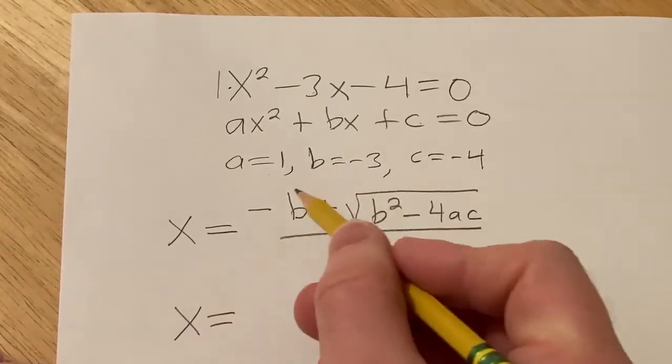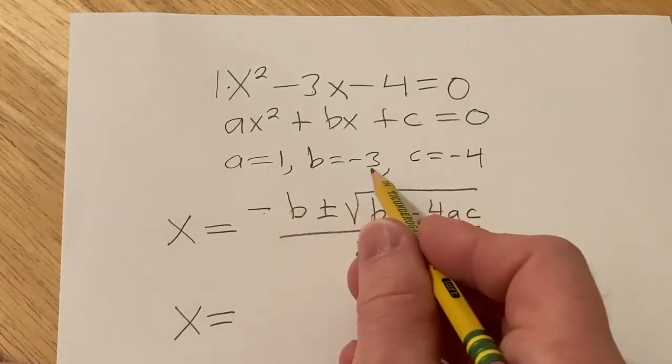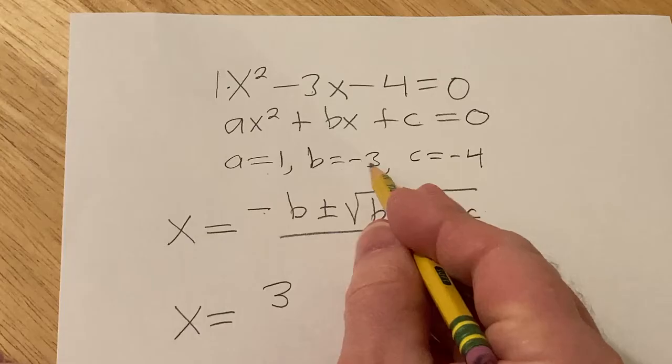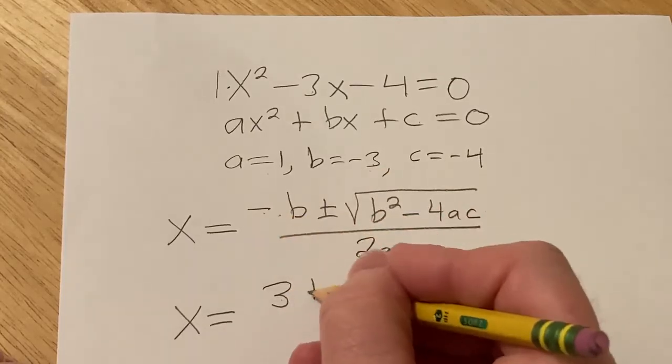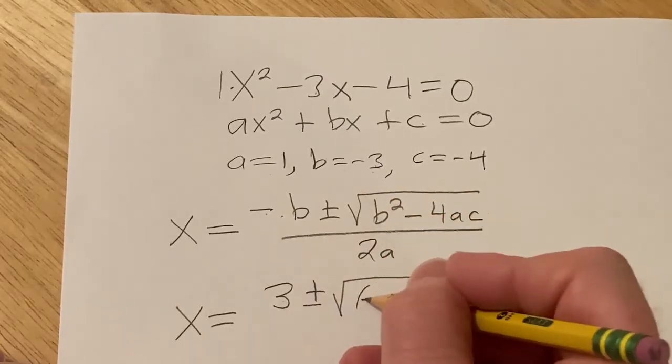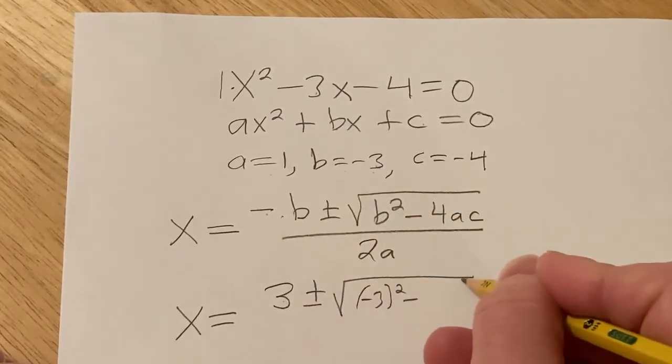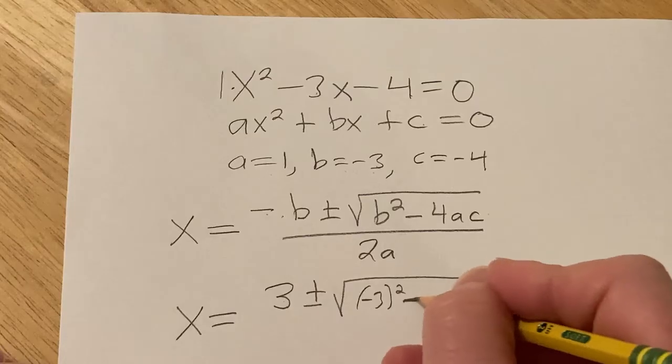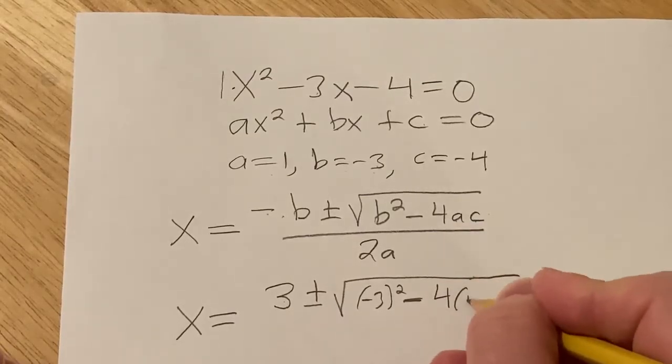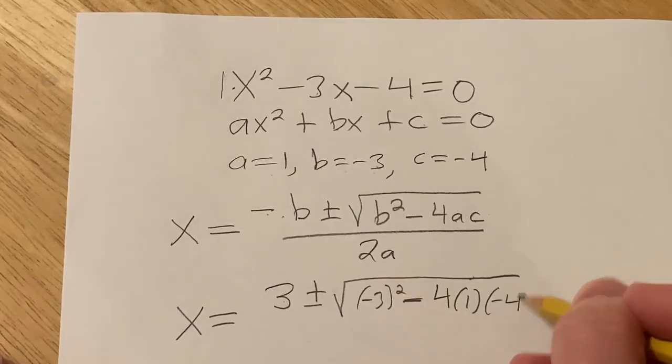So x is equal to, so there's already a negative here, and b is negative 3, so it's going to become a positive 3. Okay, so negative and negative is positive. Plus or minus the square root of b squared, so that's going to be negative 3 squared, minus, and you can skip steps if you want, but don't skip this one. It's 4ac, so it's 4 times 1 times c, which is negative 4.